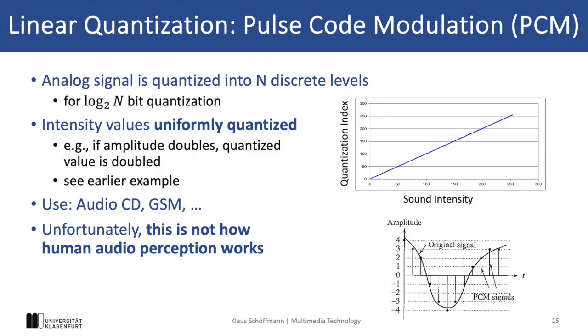Now, let's take a look at the difference between linear quantization and non-linear quantization. With linear quantization, we actually map the analog signals uniformly across the discrete levels, and if the amplitude or sound intensity doubles, also our quantization value doubles.